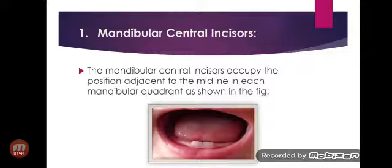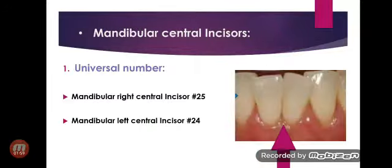The first subgroup is the mandibular central incisors. The mandibular central incisors occupy the position adjacent to the midline in each mandibular quadrant, as shown in the figure. The universal numbers of mandibular central incisors are 25 and 24 — the mandibular right central incisor is number 25, while the mandibular left central incisor is number 24.